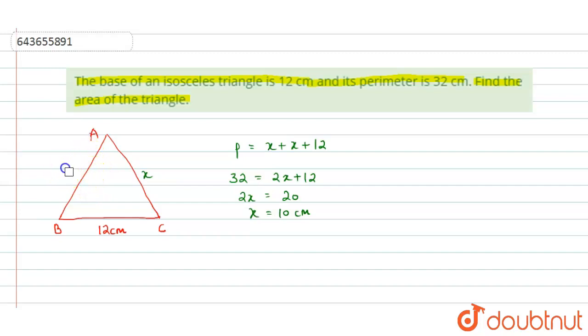So the value of X equals to 10 centimeter. Now in an isosceles triangle, if you draw the height or the altitude on the base, that divides the triangle into two congruent triangles and divides the base into two equal lengths. So if this is 12 centimeter and let's take this point as D, then this will be divided into 6 centimeter and 6 centimeter. This altitude acts as a median for this base.